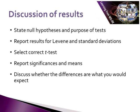When discussing the results of a t-test, they are usually presented in a particular format. We state the null hypothesis and the purpose of the test. We then report the results for Levene's and the standard deviations. We then select the correct t-test — whether equal variance is assumed or not assumed. We report the significance and the means, and we discuss whether the differences are what we would expect.